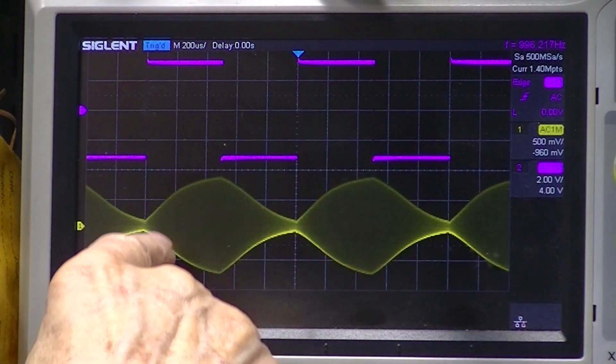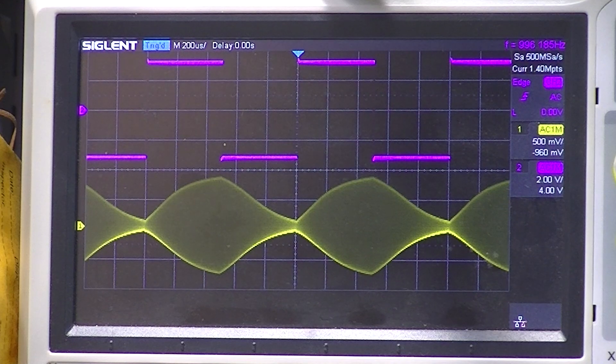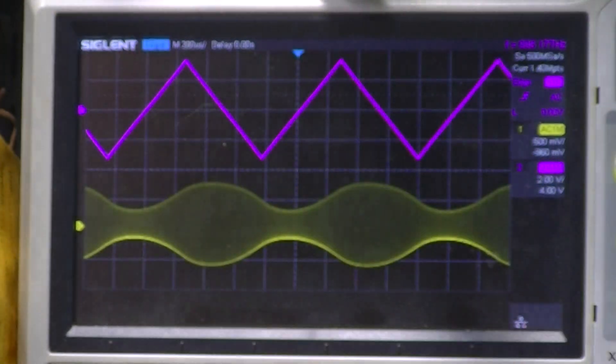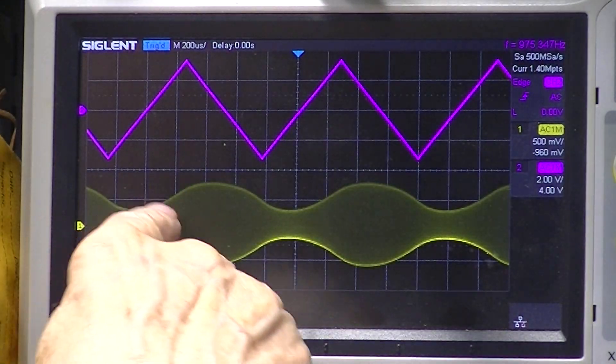Square wave produces this envelope and a triangular wave. That's the modulating wave and this is the envelope.